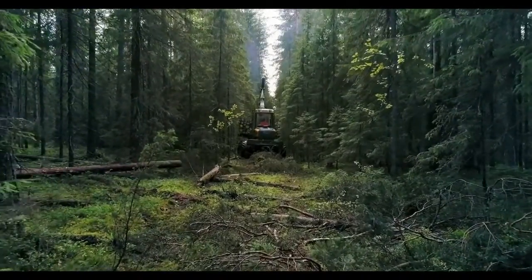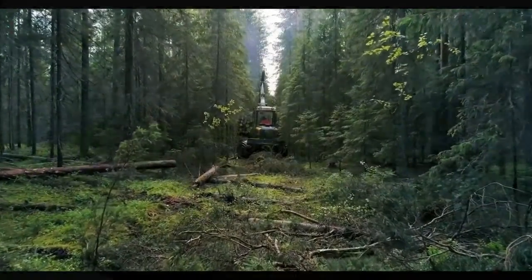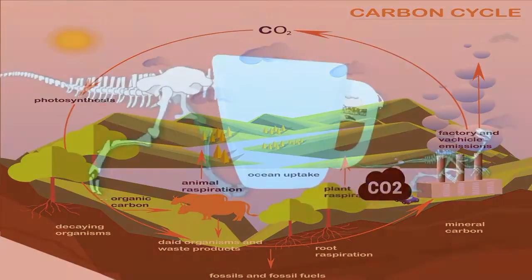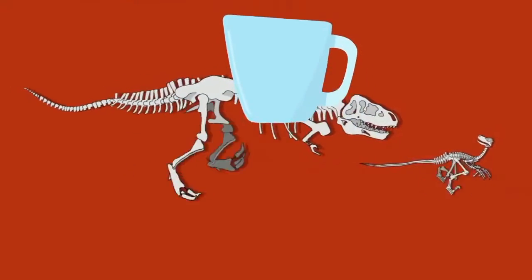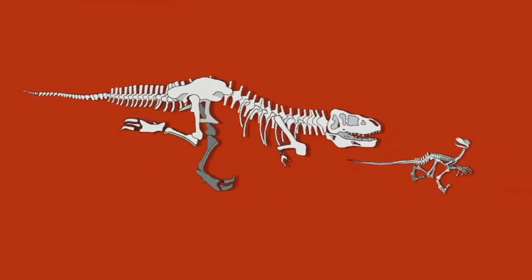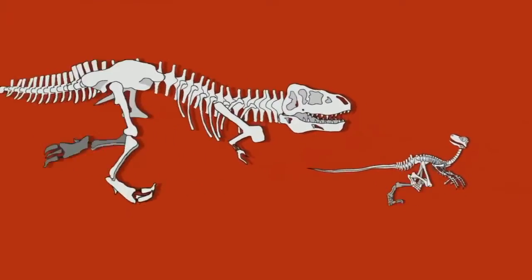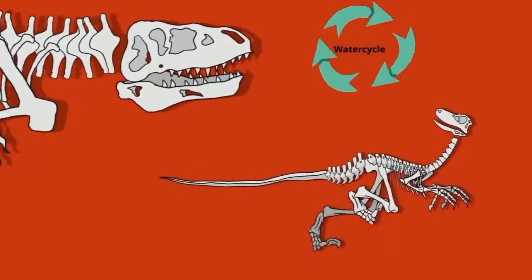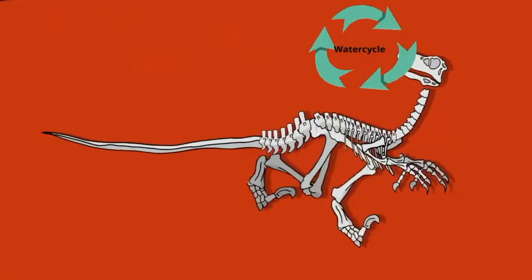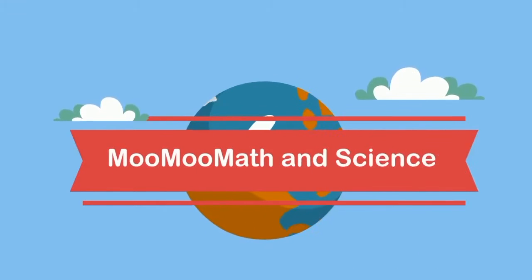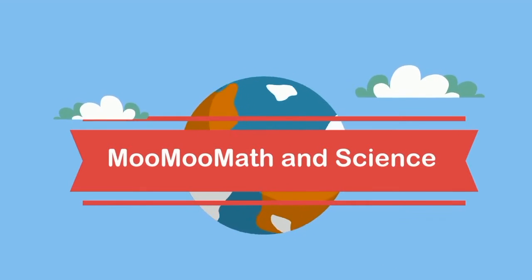So there you go — an overview of the path an atom of carbon may take during the carbon cycle. The water we drink today is the same water enjoyed by dinosaurs a long time ago. This is because the water cycle helps keep water going round and round. Welcome to the water cycle with some demos.